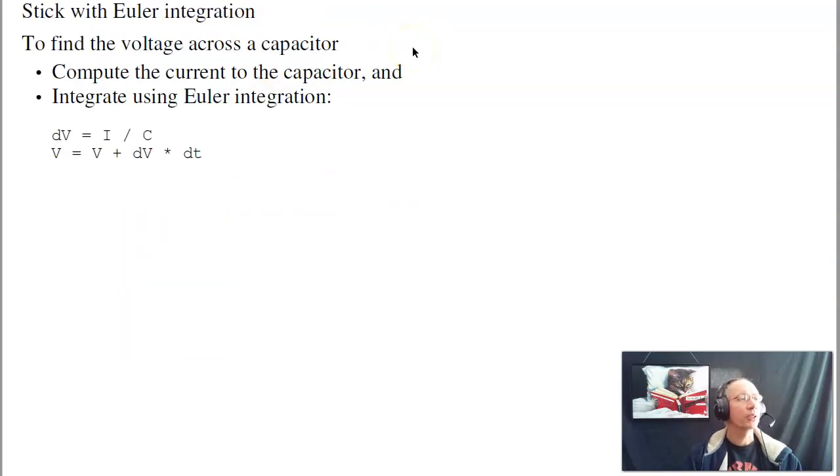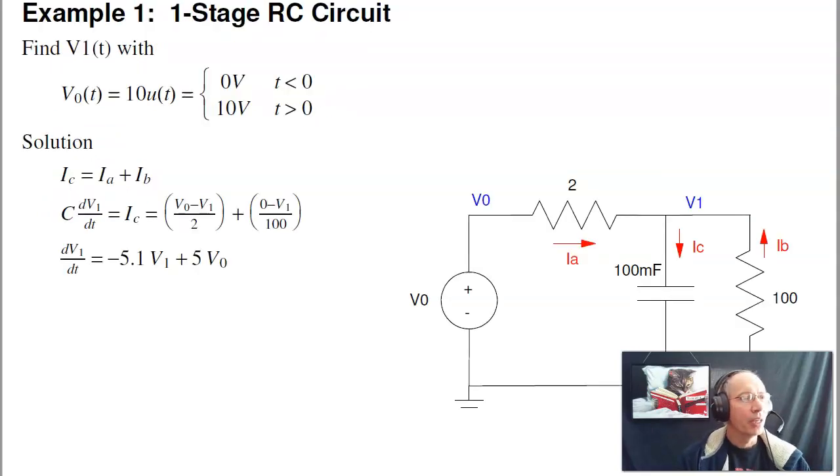So by using Euler integration, what I want to do is find the voltage. From i equals c dv/dt, the derivative of the voltage is the current divided by capacitance. I can then integrate. The area under the curve is the old area plus height times width, and that'll give me V of t. As an example, suppose I had this circuit. The voltage is initially at zero volts, meaning everything's discharged. At t equals zero, it turns on to 10 volts. Find V1 of t.